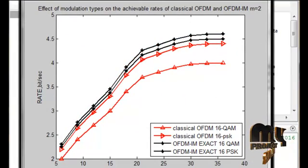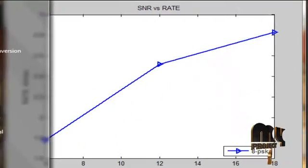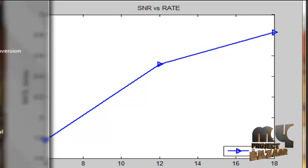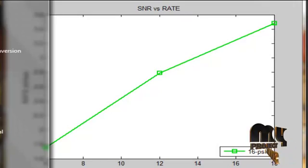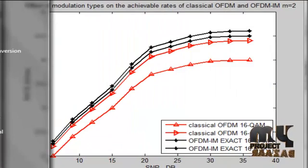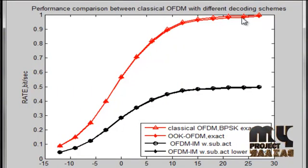Let us see the performance analysis of the product. First, we compare classical OFDM with OFDM-IM using localized grouping and interleaved grouping in terms of achievable rate. This shows 8-PSK and 16-PSK results. We then discuss different decoding scheme performances for classical OFDM-IM.